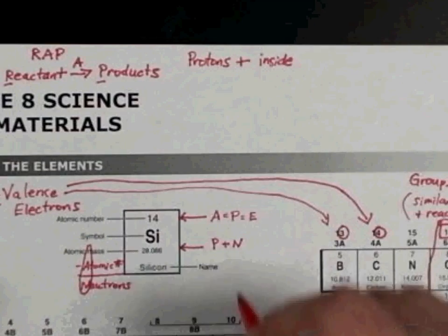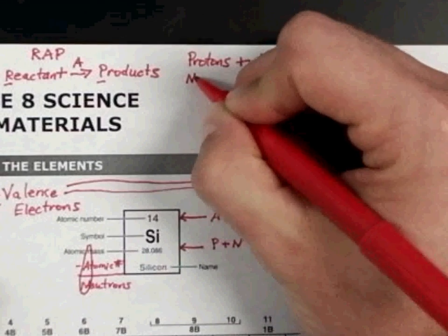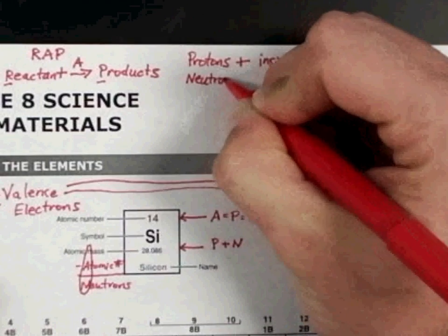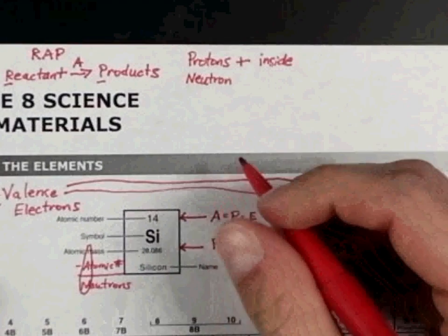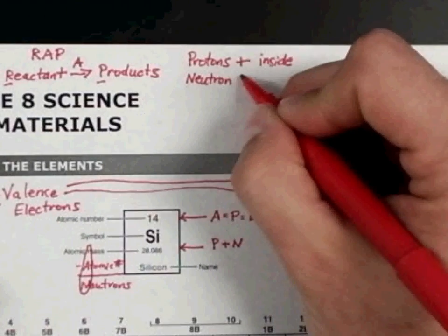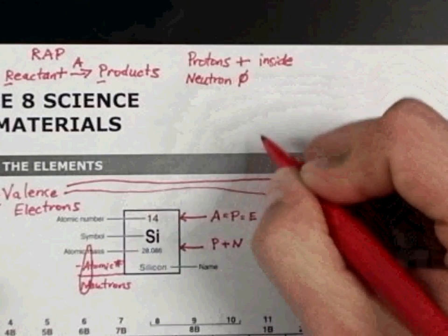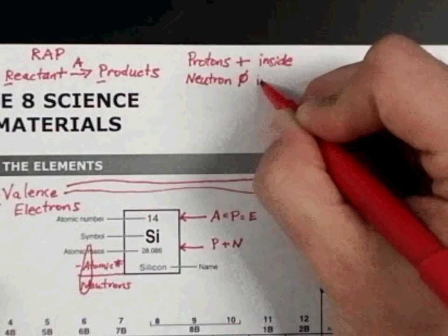And then next, we have a neutron, which is a negative charge, or no, excuse me, a no charge, or a neutral charge. And they are found inside the atom as well.